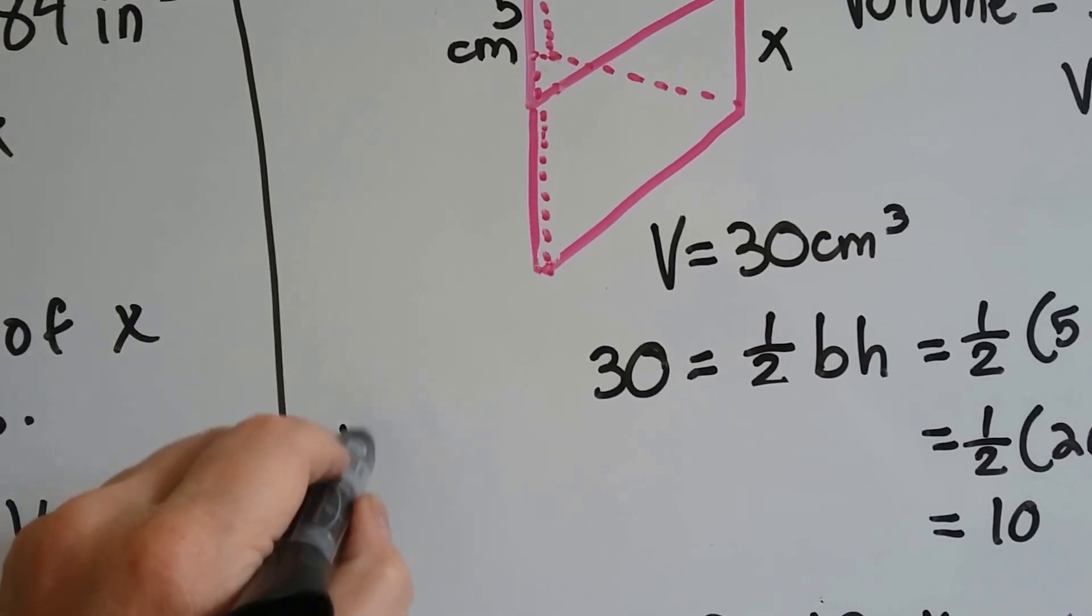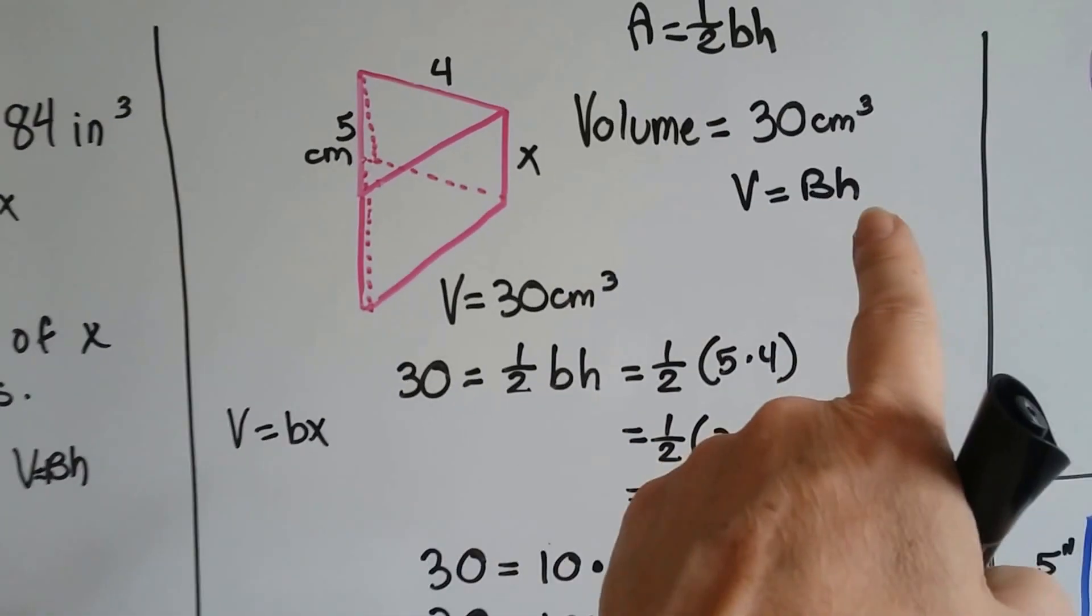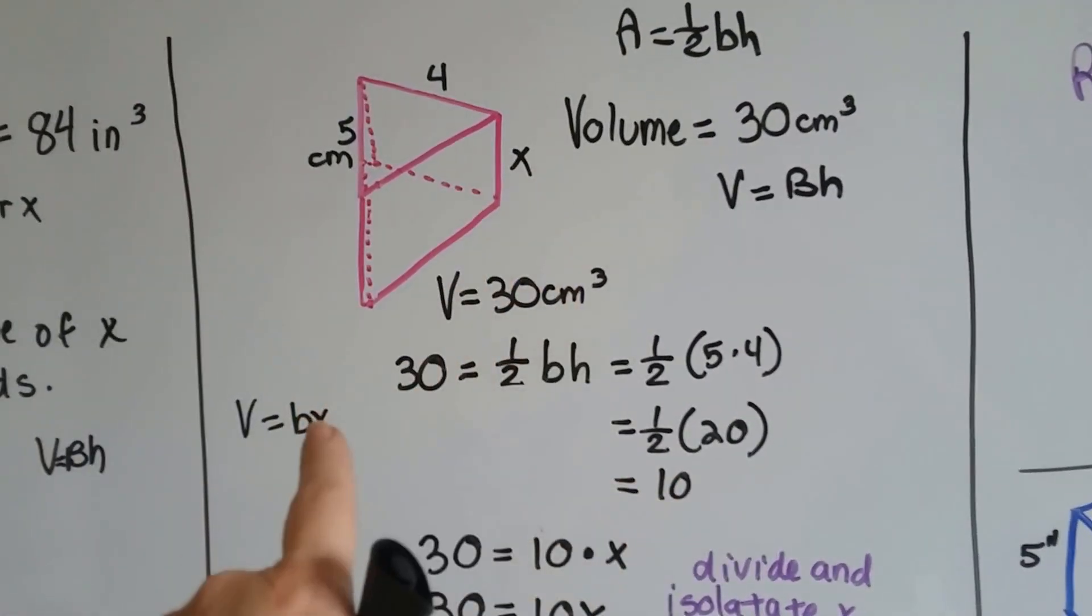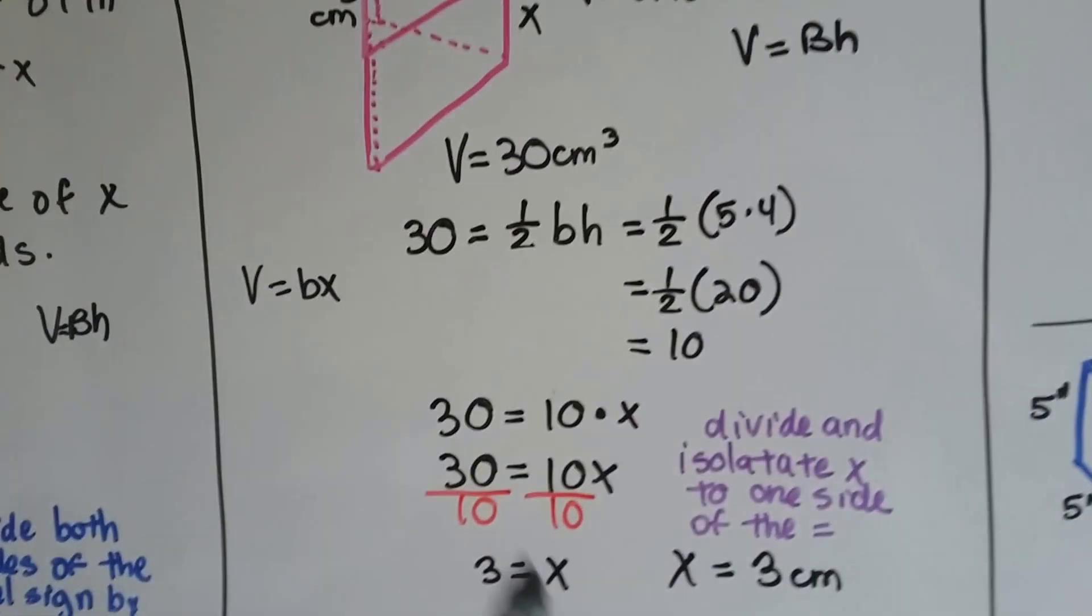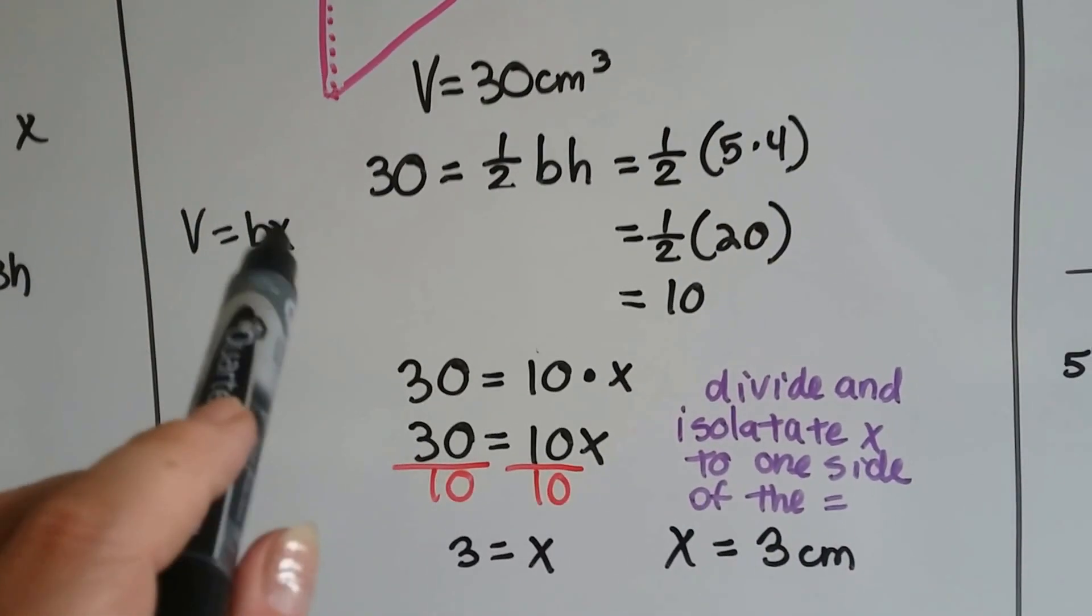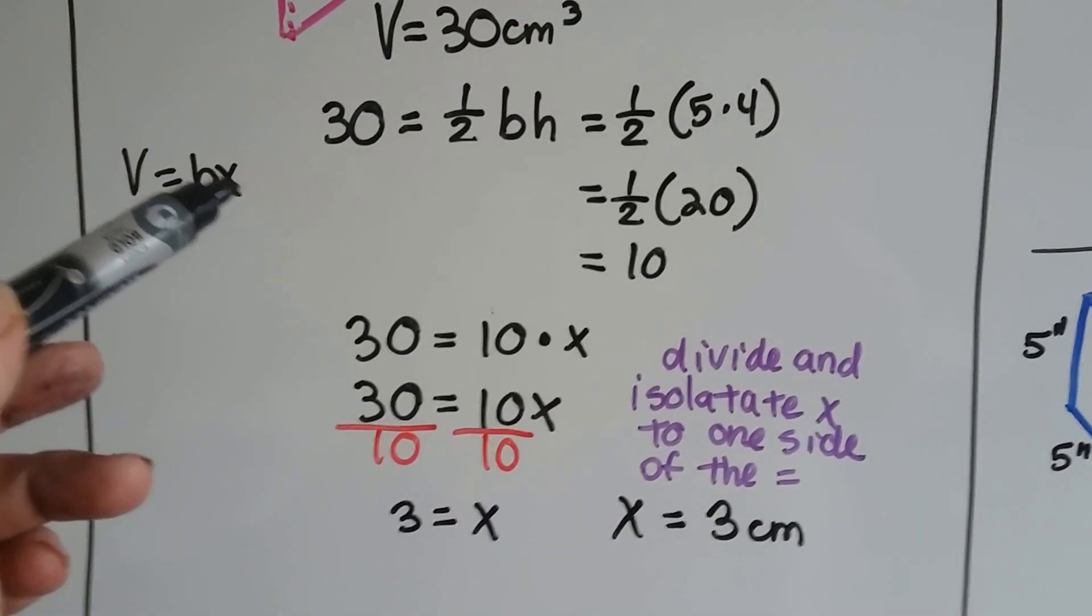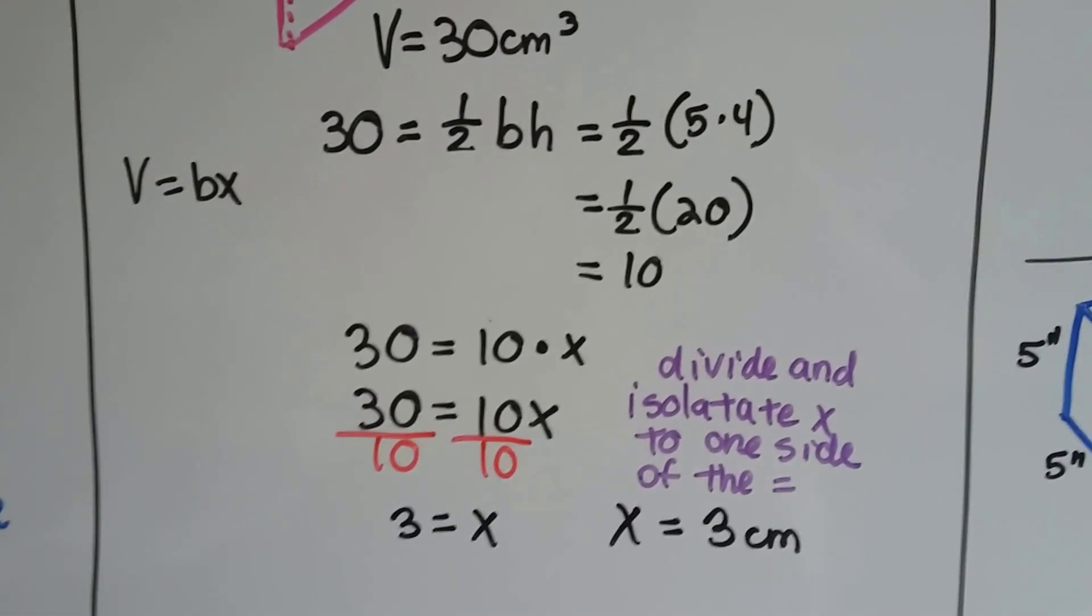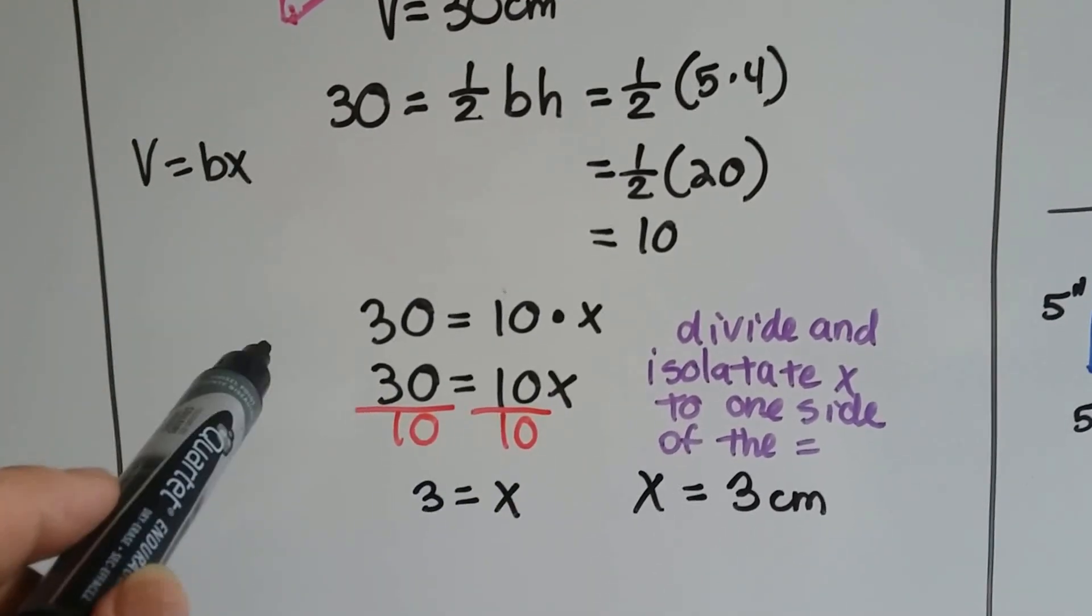We don't know the h, so x is taking the place of the h in the formula. It's almost like it would look like this: volume equals bx, because we don't know what the h is. The x is taking its place. I could have used an h there, we're using x in its place, it still makes it the same thing. It's just a variable, and we know what variables are - they're alphabets that just take the place of a number that we don't know. It's just taking the number's place until we find out what the number is.